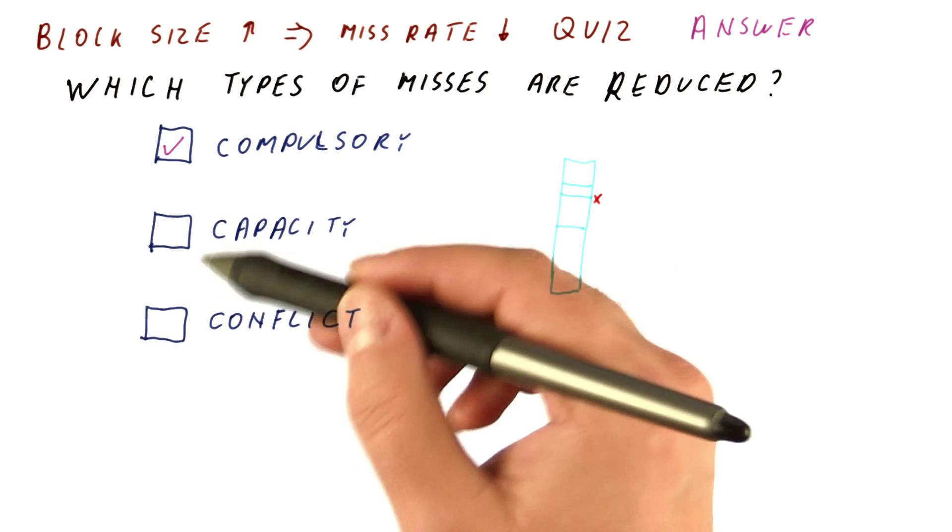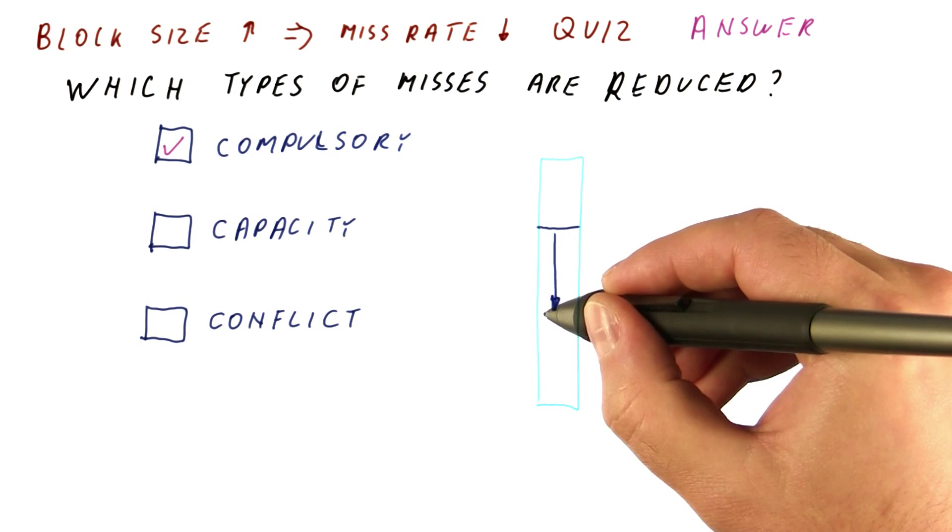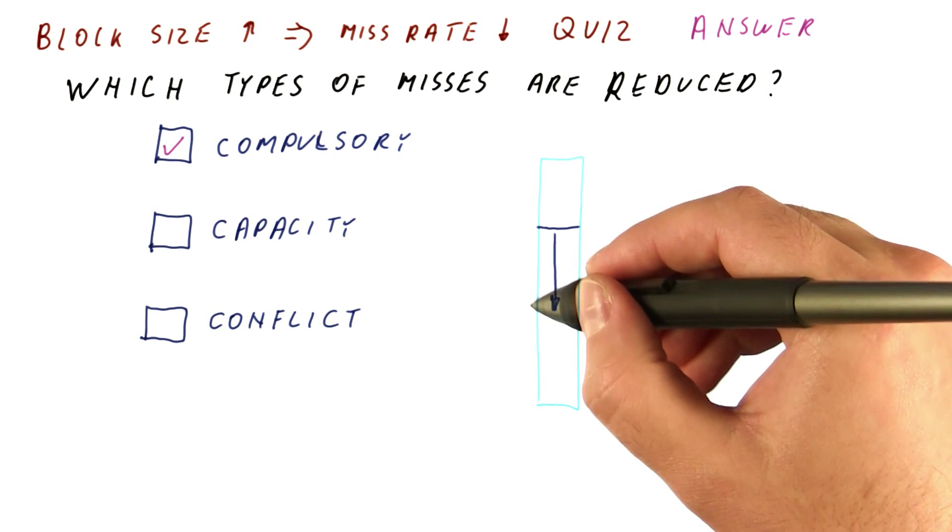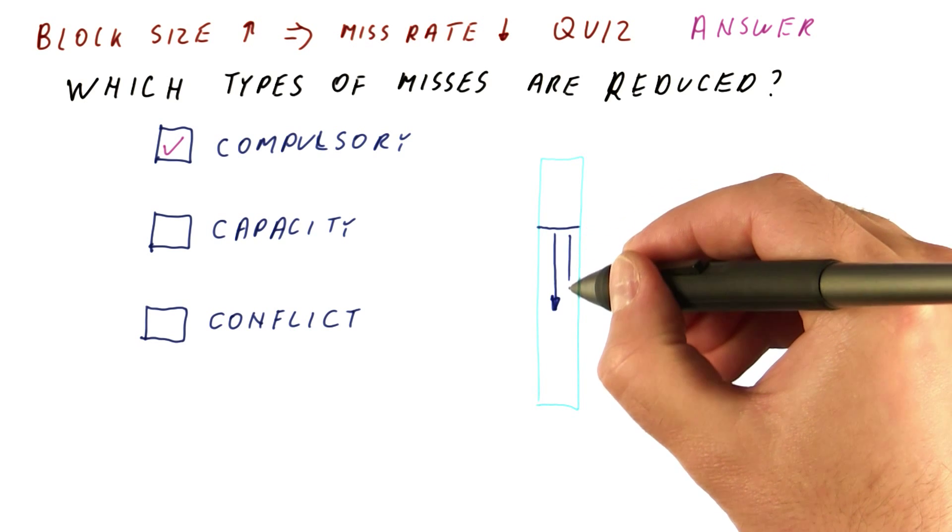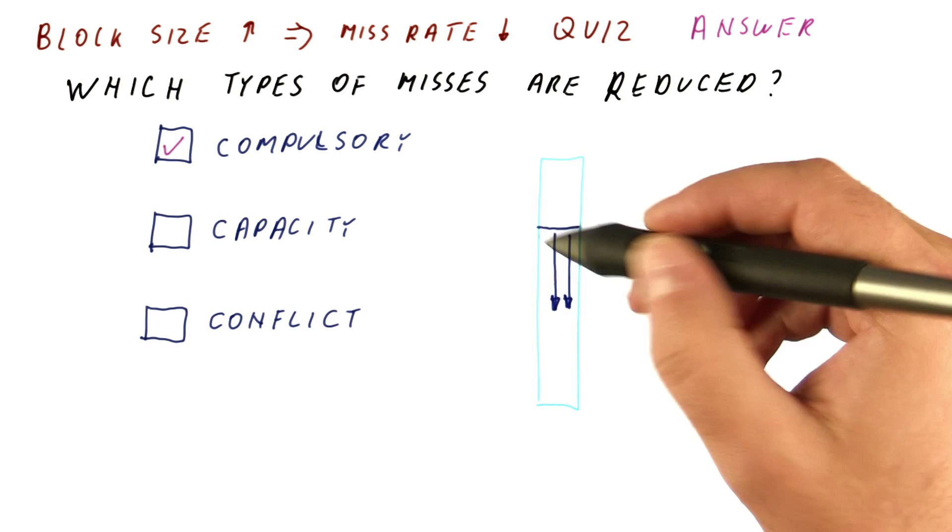Now let's look at capacity misses. Let's say that the program is accessing a relatively large array that doesn't fit in the cache, and then we go back and access it again. On the second set of accesses, we are having capacity misses.